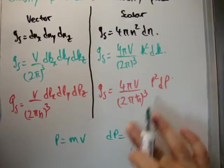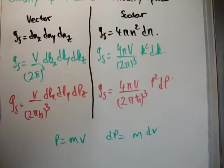So we see that anywhere we have a p, we just put an mv. Anywhere we have a dp, we put an m dv. It's pretty straightforward.